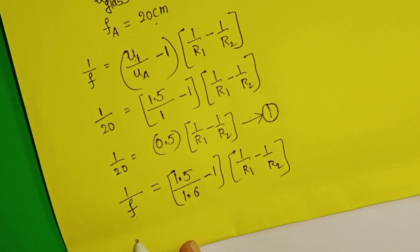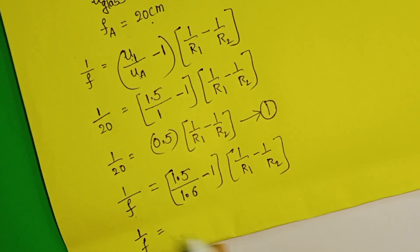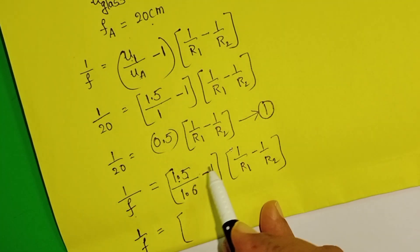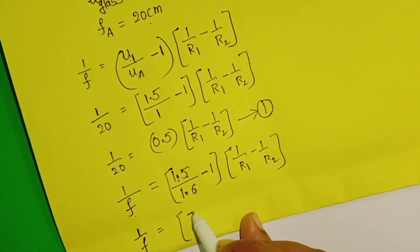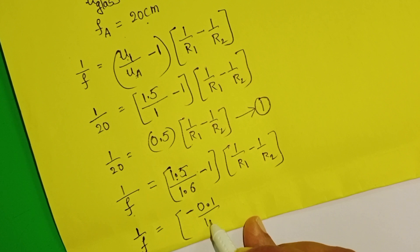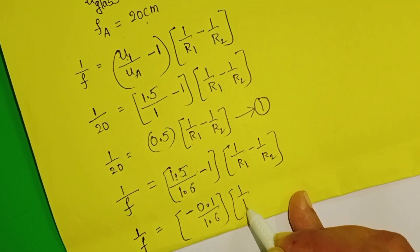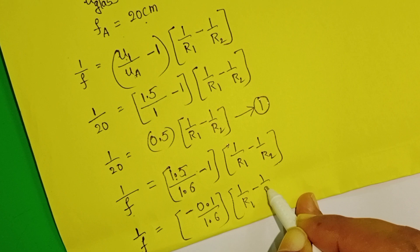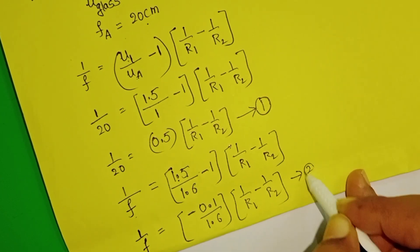Simplify equation 2: 1/F = (1.5 − 1.6) / 1.6 × (1/R1 − 1/R2), which gives −0.1/1.6 × (1/R1 − 1/R2). Take this as equation 2.